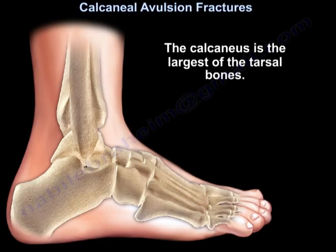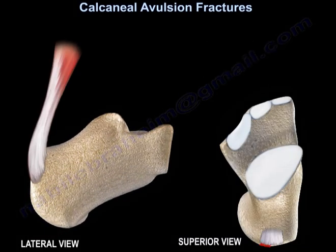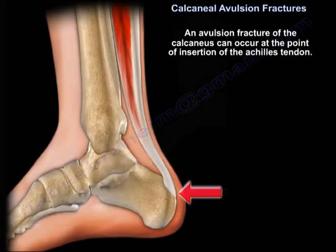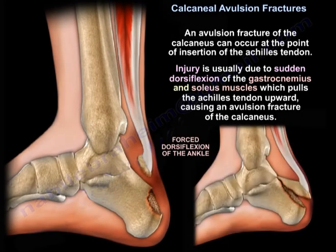Calcaneal avulsion fractures. The calcaneus is the largest of the tarsal bones. Avulsion fracture of the calcaneus can occur at the point of insertion of the Achilles tendon. Injury is usually due to sudden dorsiflexion of the gastrocnemius and soleus muscles, which pulls the Achilles tendon upward, causing an avulsion fracture of the calcaneus.